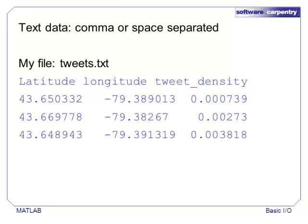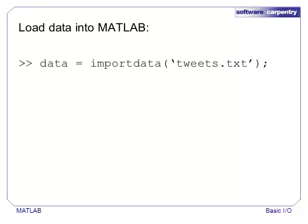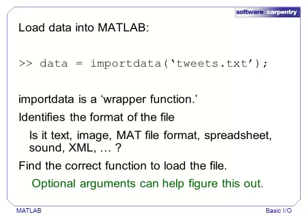Here is an example of a common file format. Each row of this file contains three numbers separated by a space. Text files are not the most efficient way to store data, but they are nice because humans can quickly check what is in the file. There are several commands that handle data from text files, but the most flexible is the command importdata. Sometimes importdata may have trouble identifying the correct format of a file. This is especially true if the file uses an unexpected column delimiter or has multiple header lines. Type 'help importdata' to see more information about optional arguments.